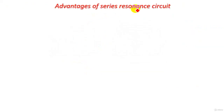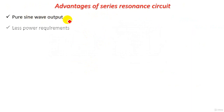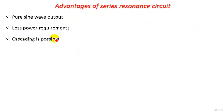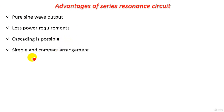Advantages of the series resonance circuit: First, a pure sine wave output is obtained with no harmonics. Second, less power requirements. Third, cascading is possible to produce very high AC voltage, and it offers a simple compact arrangement.